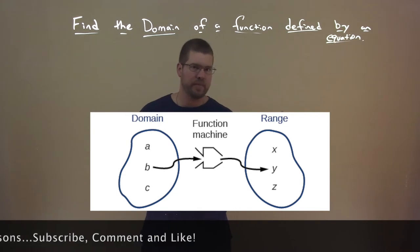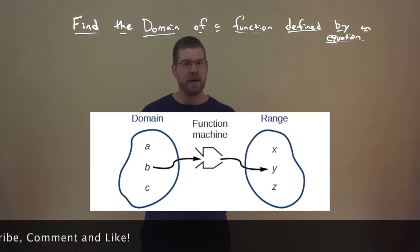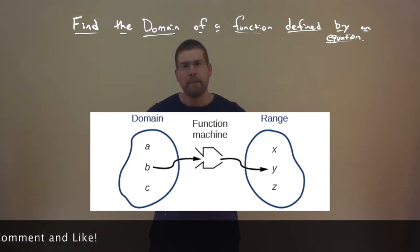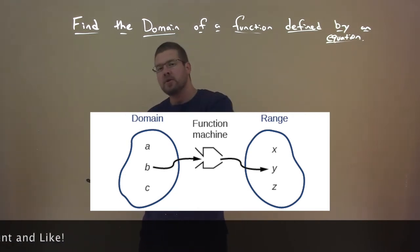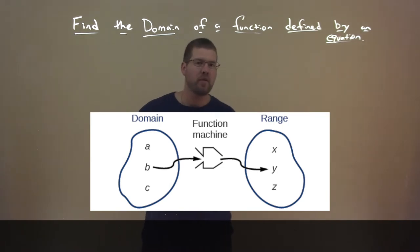The outputs are X, Y, Z. That's really the relationship: we take a domain, put it into some function, and out comes the range.